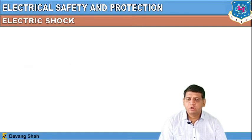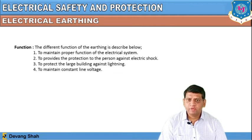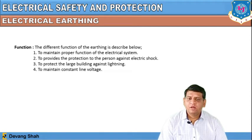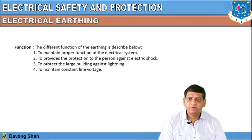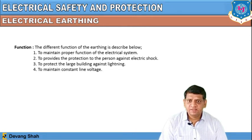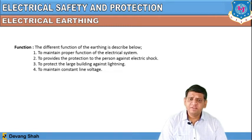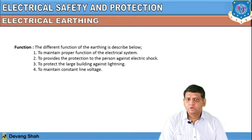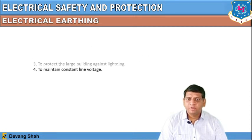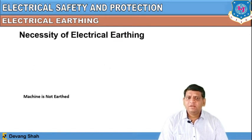To avoid electric shock, we can use proper electrical earthing of heavy equipment that carries high values of current. The functions of earthing include: to maintain proper function of the electrical system, to provide protection to persons against electric shock, to protect large buildings against lightning, and to maintain a constant line voltage.